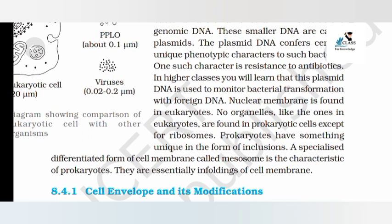No organelles like those in eukaryotes are found in prokaryotic cells, except for ribosomes. Prokaryotes have something unique in the form of inclusions. A specialized differentiated form of cell membrane called mesosomes is characteristic of prokaryotes. They are essentially enfoldings of the cell membrane.